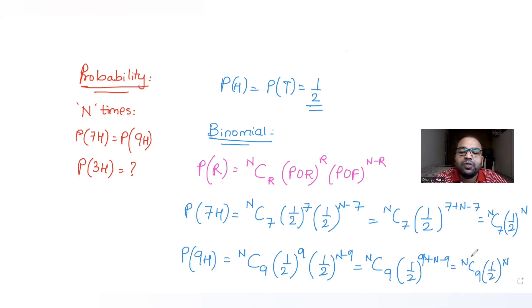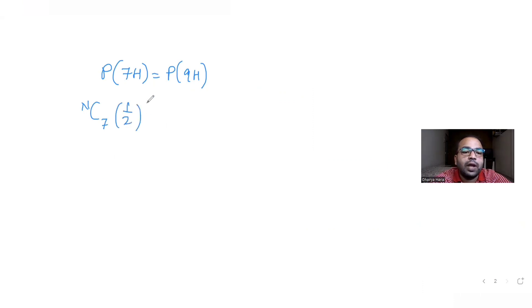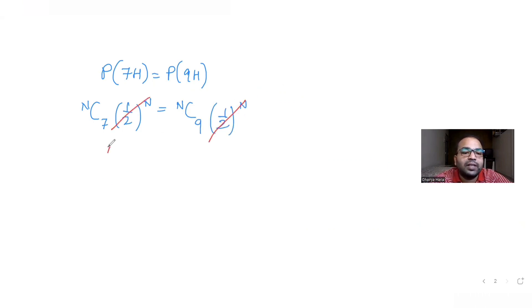Now equating the two: since P(7 heads) = P(9 heads), we have nC7 × (1/2)^n = nC9 × (1/2)^n. Cancelling (1/2)^n from both sides, we get nC7 = nC9.